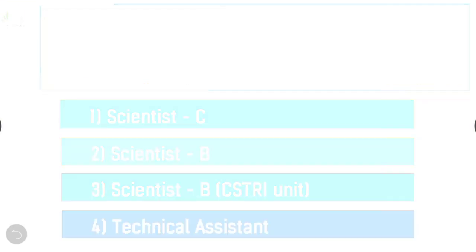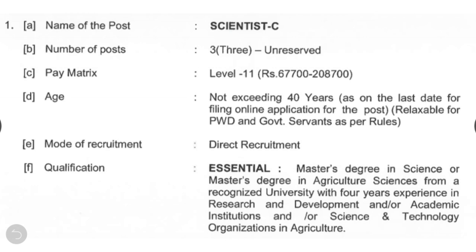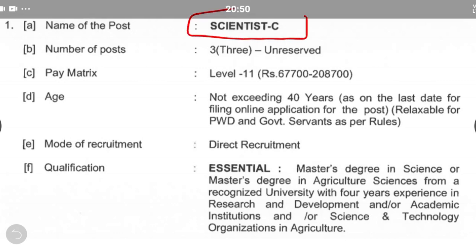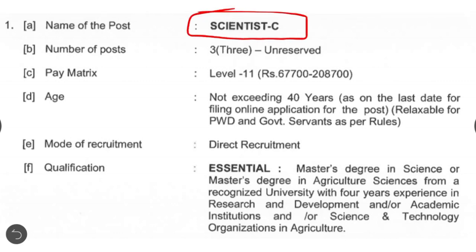Now let's see the number of posts, eligibility, and pay scale of each post. For the post of Scientist C, total three posts are available without any reservation quota. Pay scale is from rupees 67,700 to 2,08,700. Age limit for this post is 40 years — the applicant must not exceed 40 years as on the last date for filling online applications. The mode of recruitment is direct recruitment.